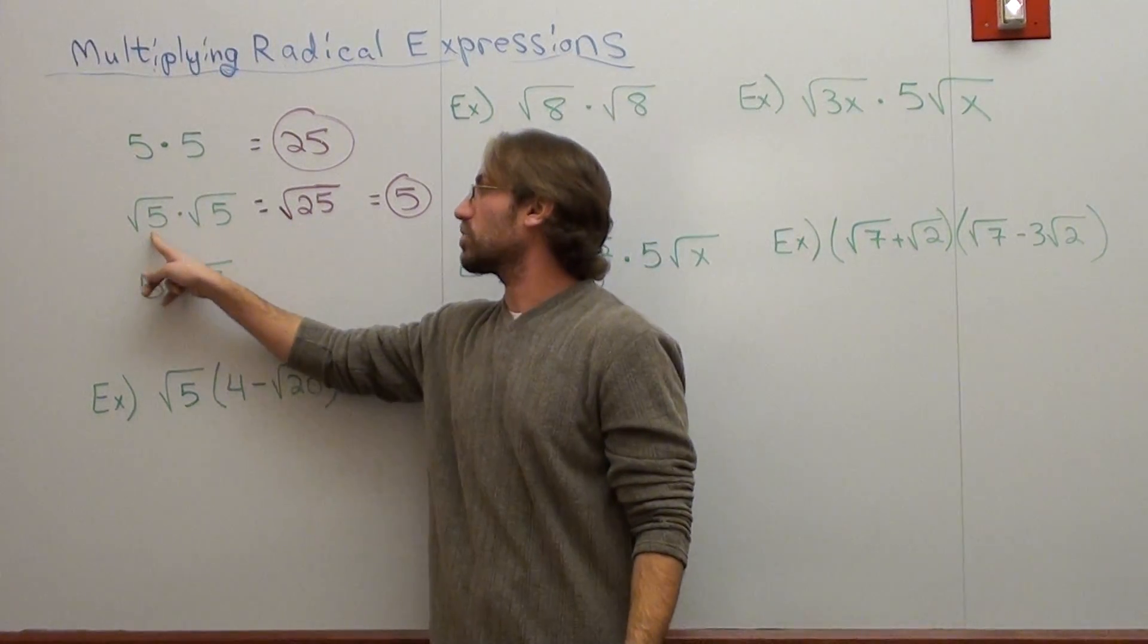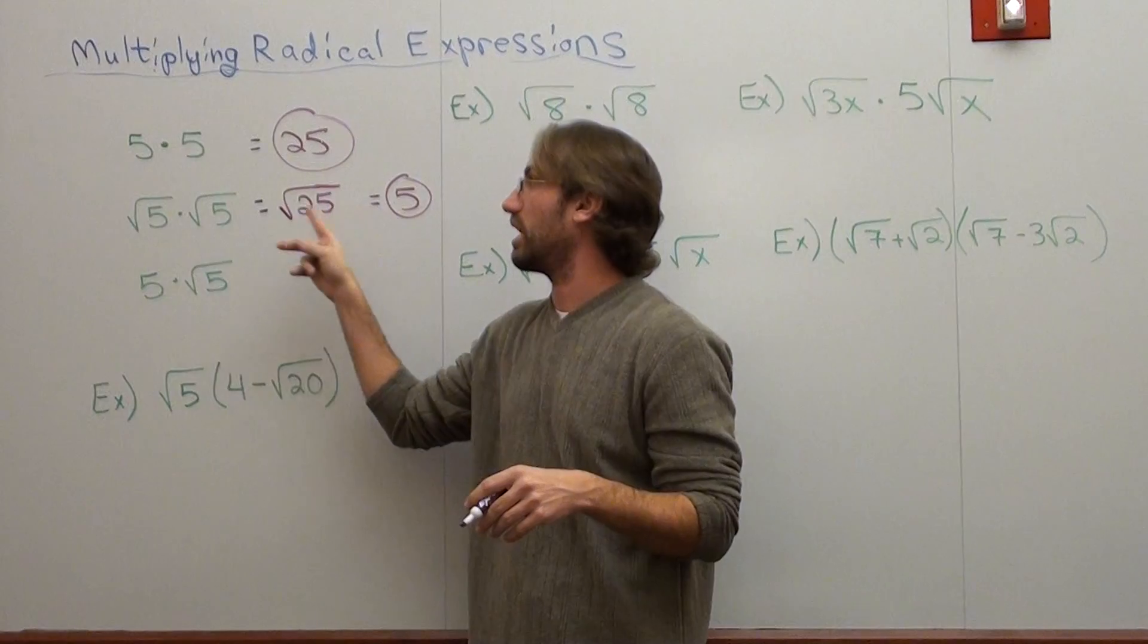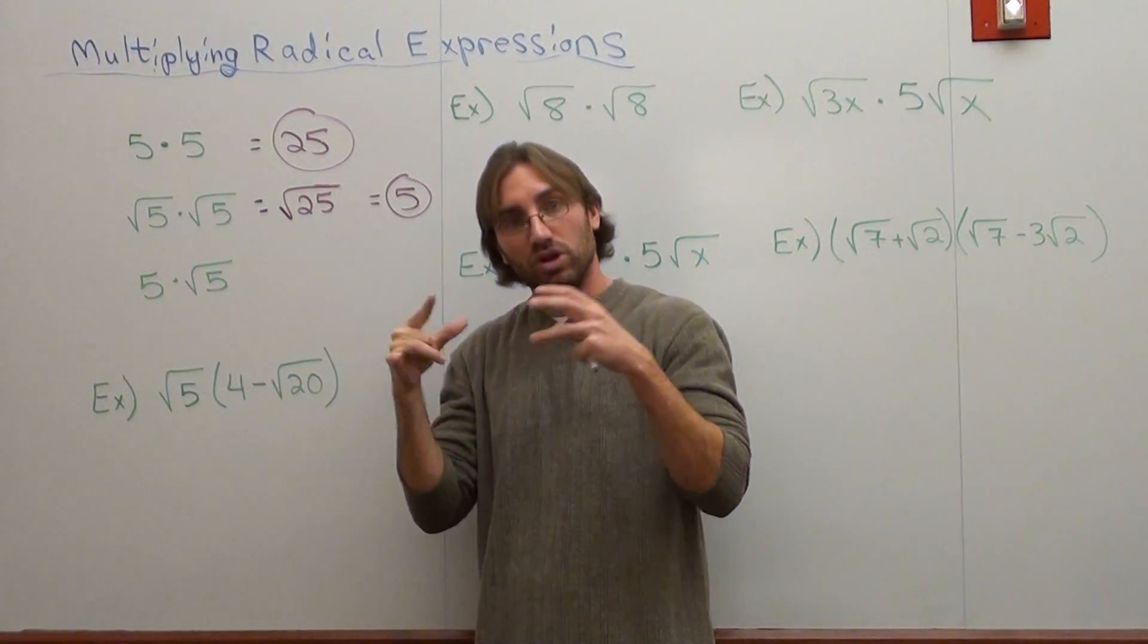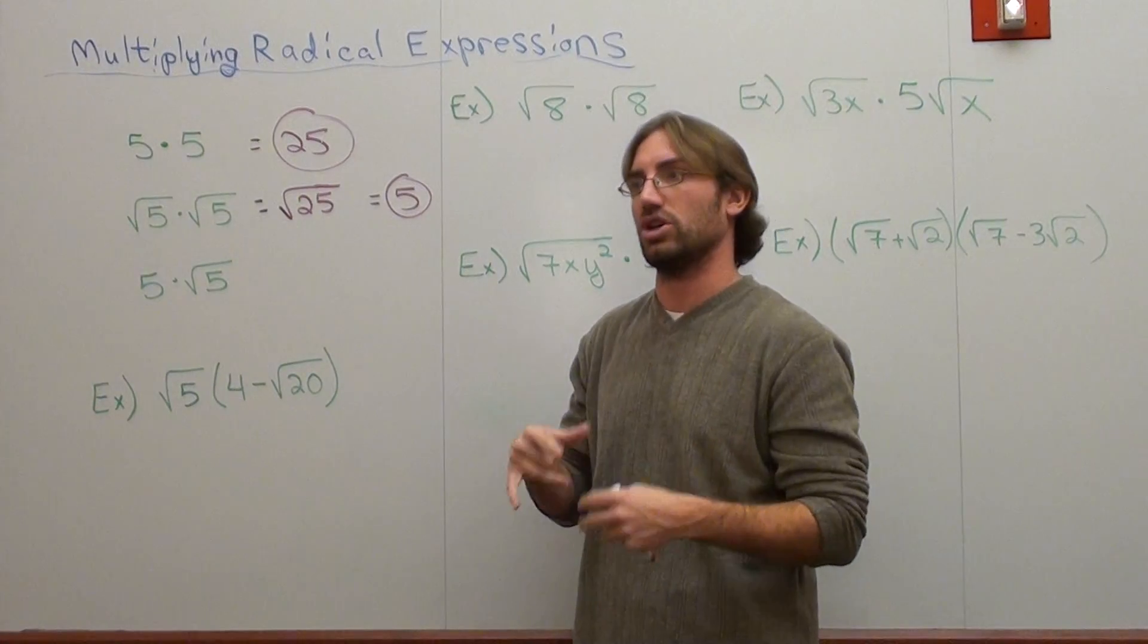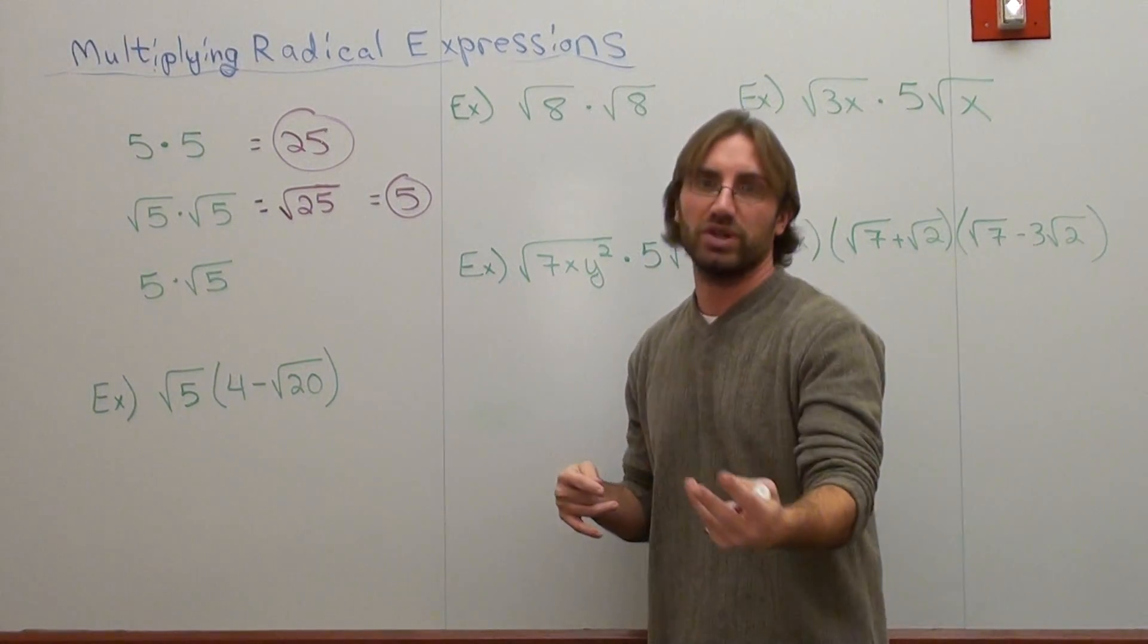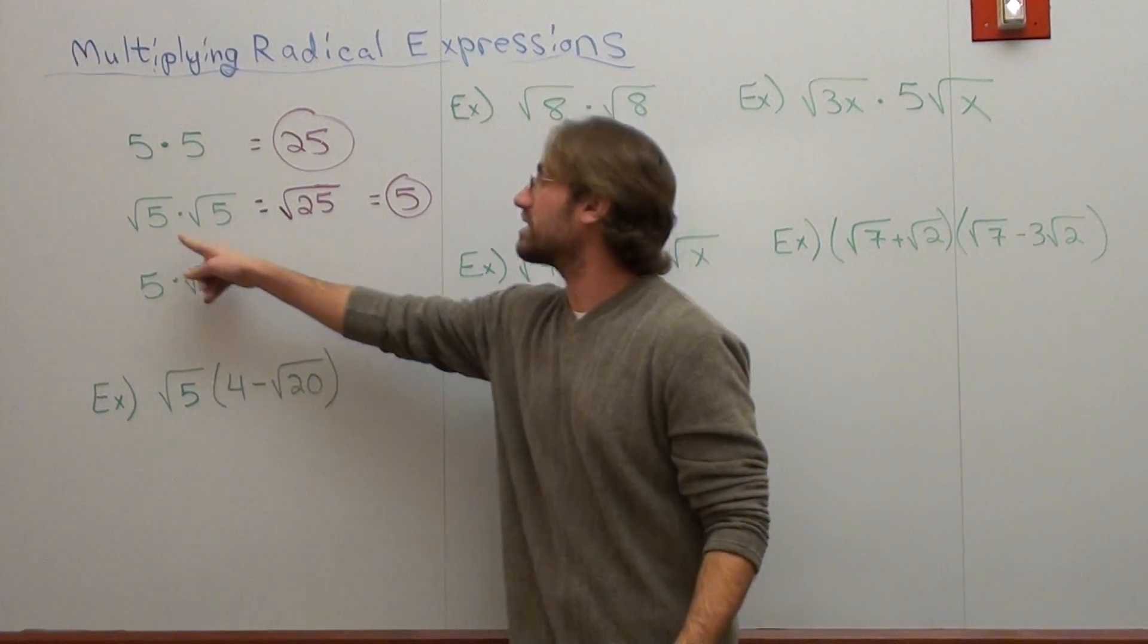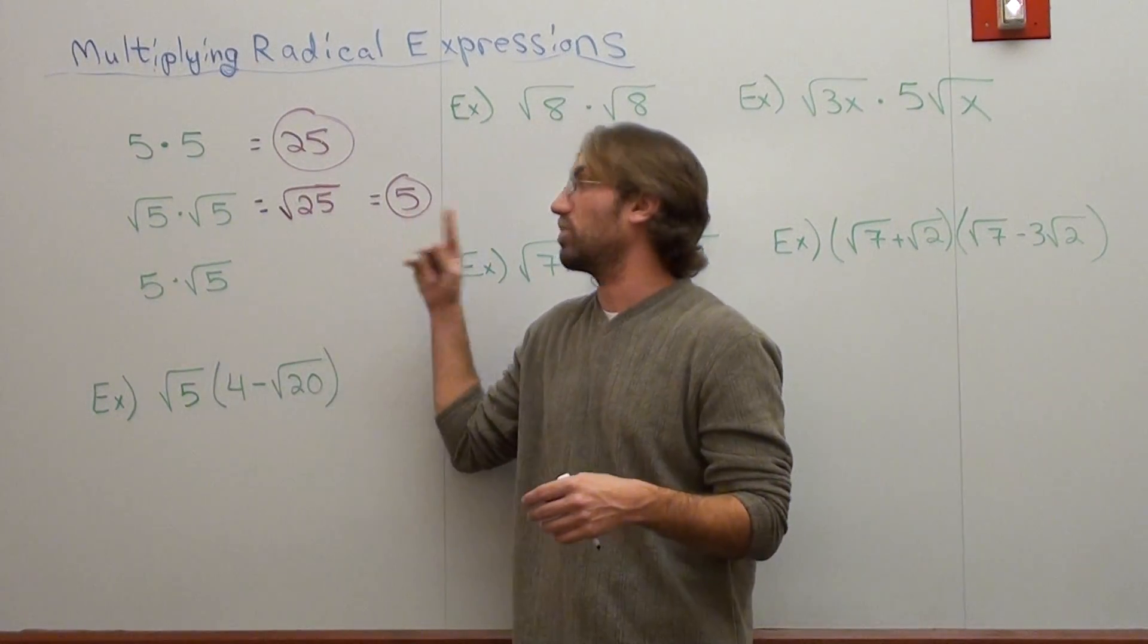when you multiply a square root times the square root, it's just whatever it is except it's under a square root now. You know, 5 times 5 is 25. Square root 5 times square root 5 is square root 25. But if you're taking the same number twice when you're multiplying square roots, like square root 4 times square root 4 is square root 16 but it's also 4. Square root 3 times square root 3 is 3. All you're doing is skipping a step. So if you've got the same square root times the same square root, it's just whatever it is without a square root.